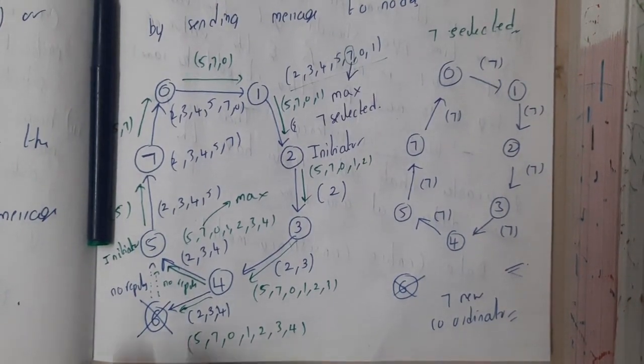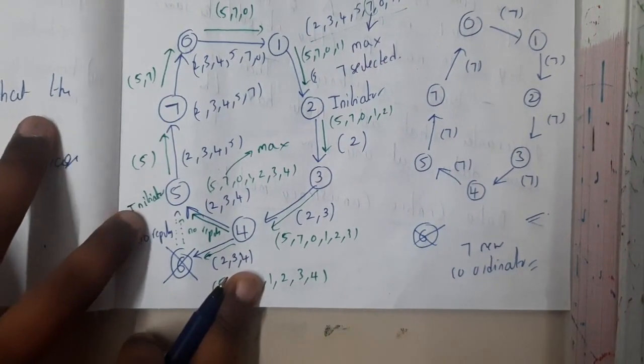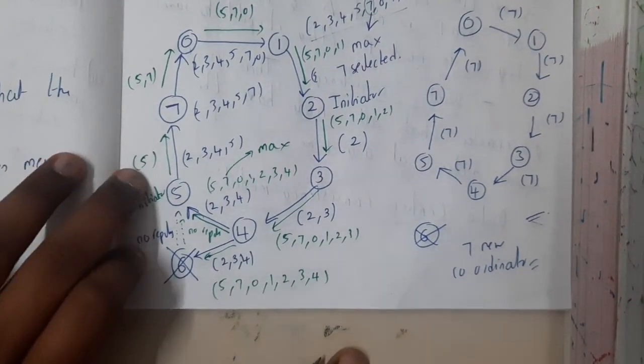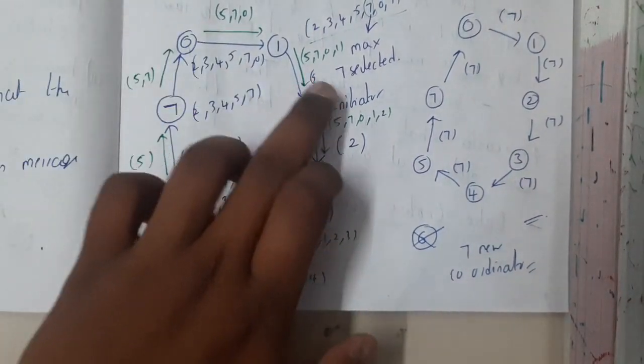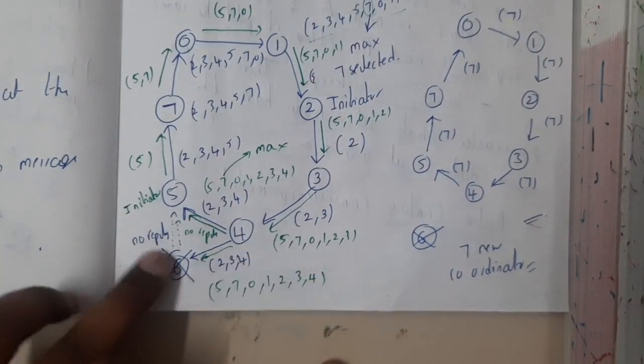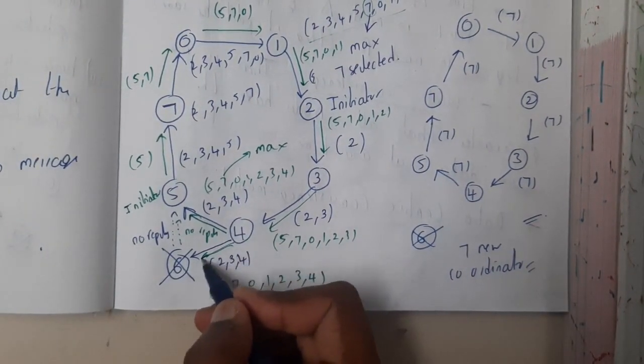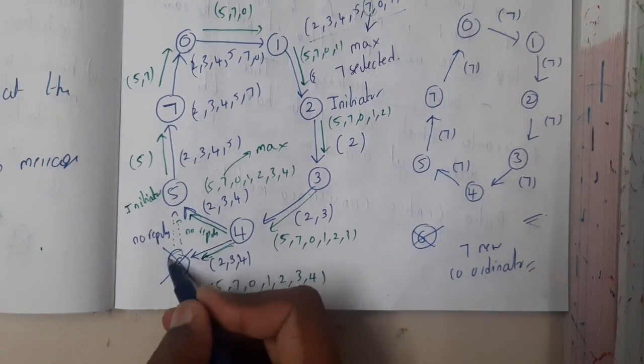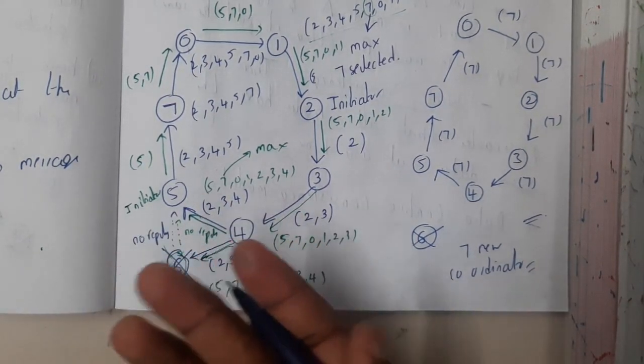That is the concept of ring algorithm. Similarly, the same situation with five - he will be initiating the election, adding his number into the list: five, five seven, five seven zero, five seven zero one, five seven zero one two, five seven zero one two three four. Here you might notice that it will also send to this node, but there is no response, so it is automatically in a non-reachable state.